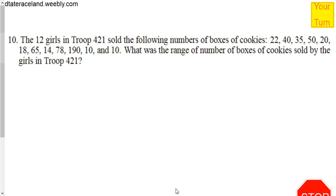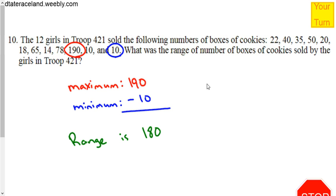Here's the very last one that we're going to do today. Twelve girls in Troop 421 sold the following number of boxes of cookies: 22, 40, 35, 50, 20, 18, 65, 14, 78, 190, 10, and 10. What was the range of number of boxes of cookies sold by the girls in Troop 421? Hit play when you're ready. The maximum was 190. The minimum was 10. Subtract the two. And we see that the range is 180. So that's quite a bit of variance there. Of course, at the same time, you'll notice that there's only one person that sold more than 100 boxes. So it looks like there's quite a few that was more around the 10, 20, 30 boxes range than there were those selling almost 200 boxes there.